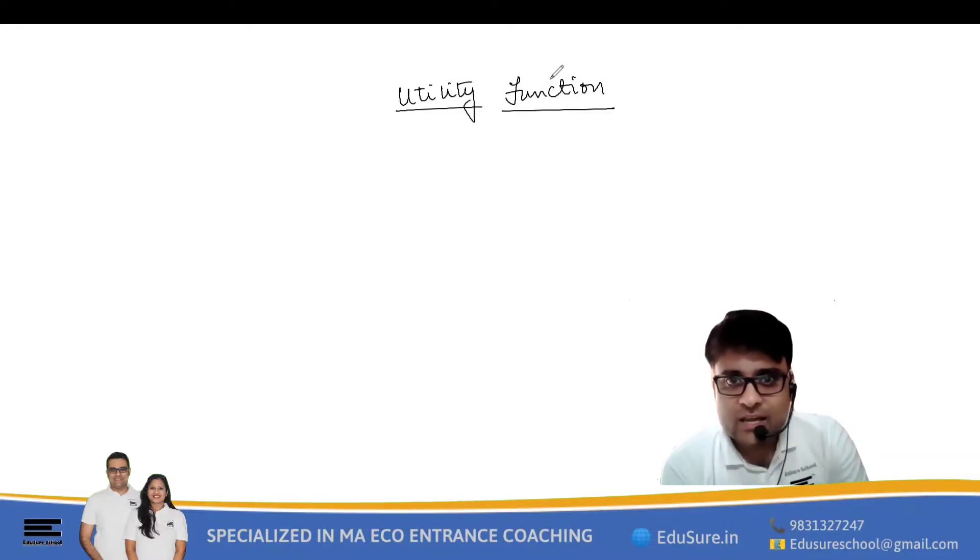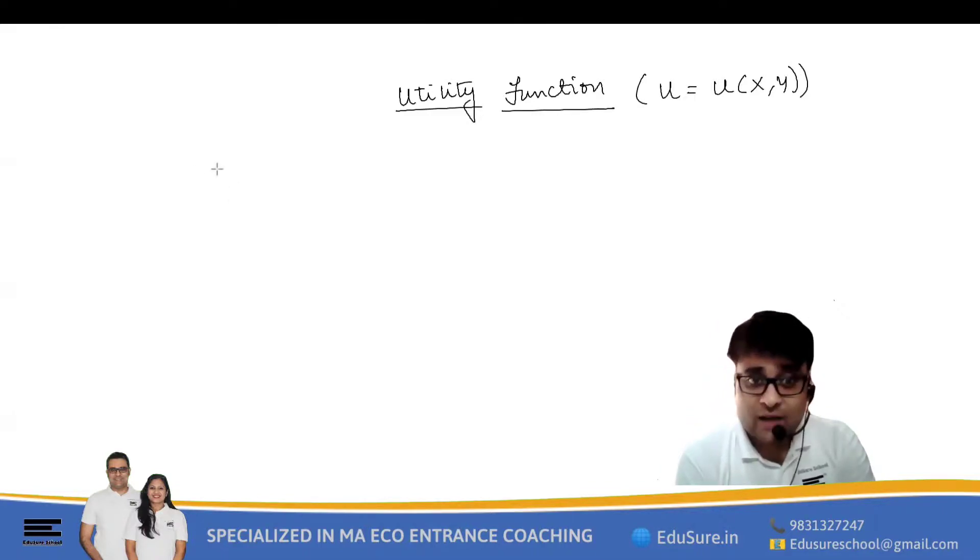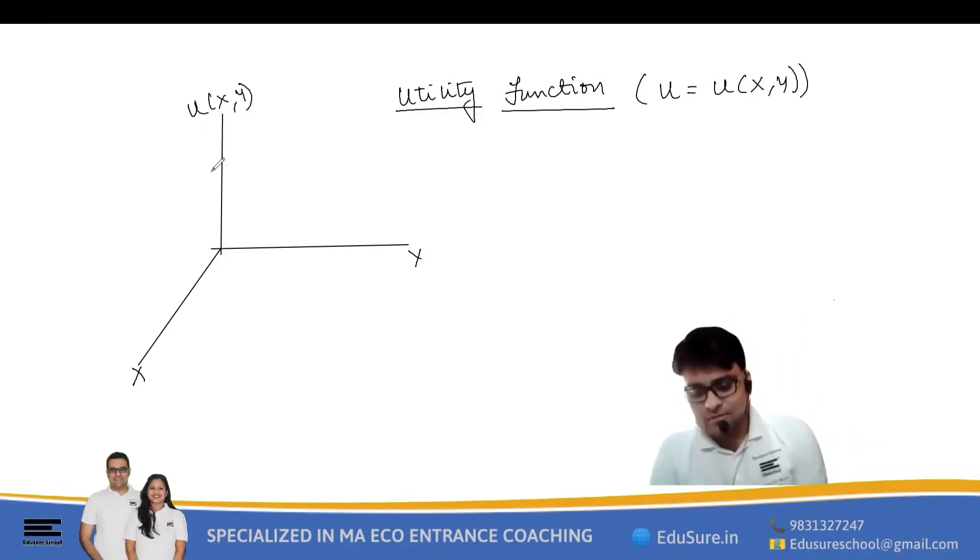For any utility function, as you can see, utility function looks like this: u is equal to a function of x and y. So if I were to graph a utility function, I'll need the help of a 3D diagram. Why a 3D diagram? Values of x and y will determine how much utility I get. So the utility function in itself, if I want to talk about it mathematically and in a diagram, I will have to show it in a 3D figure.